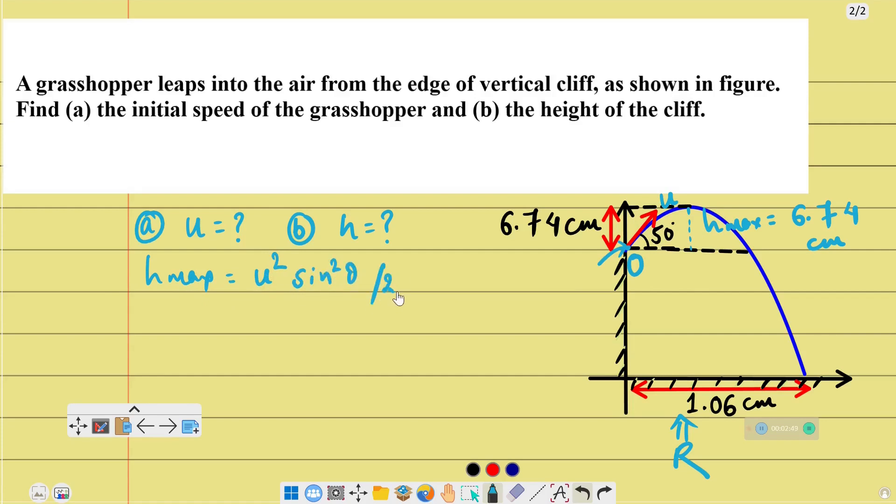Using the maximum height formula: h_max = u² sin²θ / 2g. Here we have 6.74 centimeters, so 6.74 × 10⁻² meters = u² sin²θ / 2g. The angle of projection is 50 degrees, so u² sin²50° / 2g. After solving the calculation, we get the result: u = 1.51 meters per second.